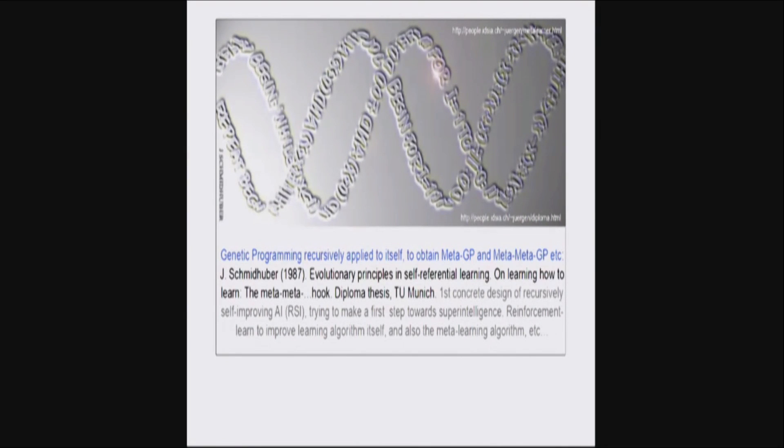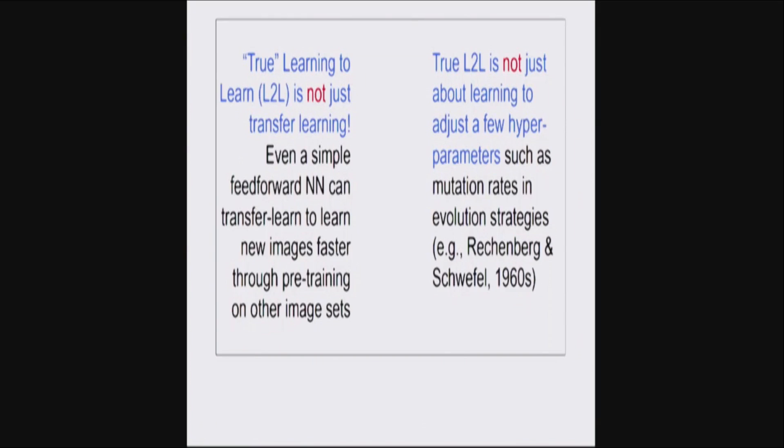But then I said, okay, let's have a second level on top of the basic level, which allows the system to search the space of arbitrary new learning algorithms that can combine existing knowledge and existing programs in new, better ways and arbitrary, computable ways. And then on top of that, another level and so on recursively and this was rather general compared to what you often see today